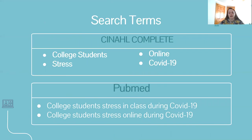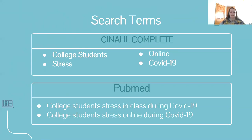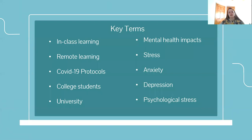Some search terms I used to find my research: I used CINAHL Complete and PubMed. CINAHL Complete mostly focused on online or remote learning students, and PubMed allowed me to find more on in-class learning students as well as online. These are some of the terms I used. Key terms I was looking for in the articles were key points — if an article didn't have any of these terms, I knew it wasn't the research I was looking for.